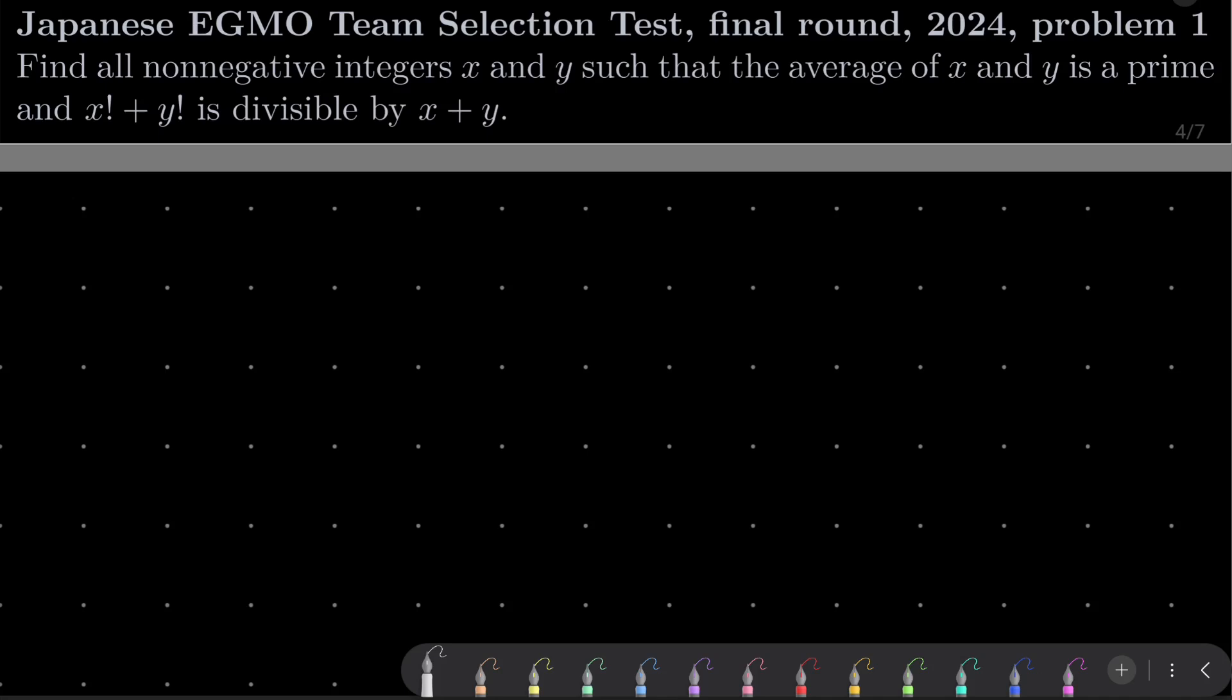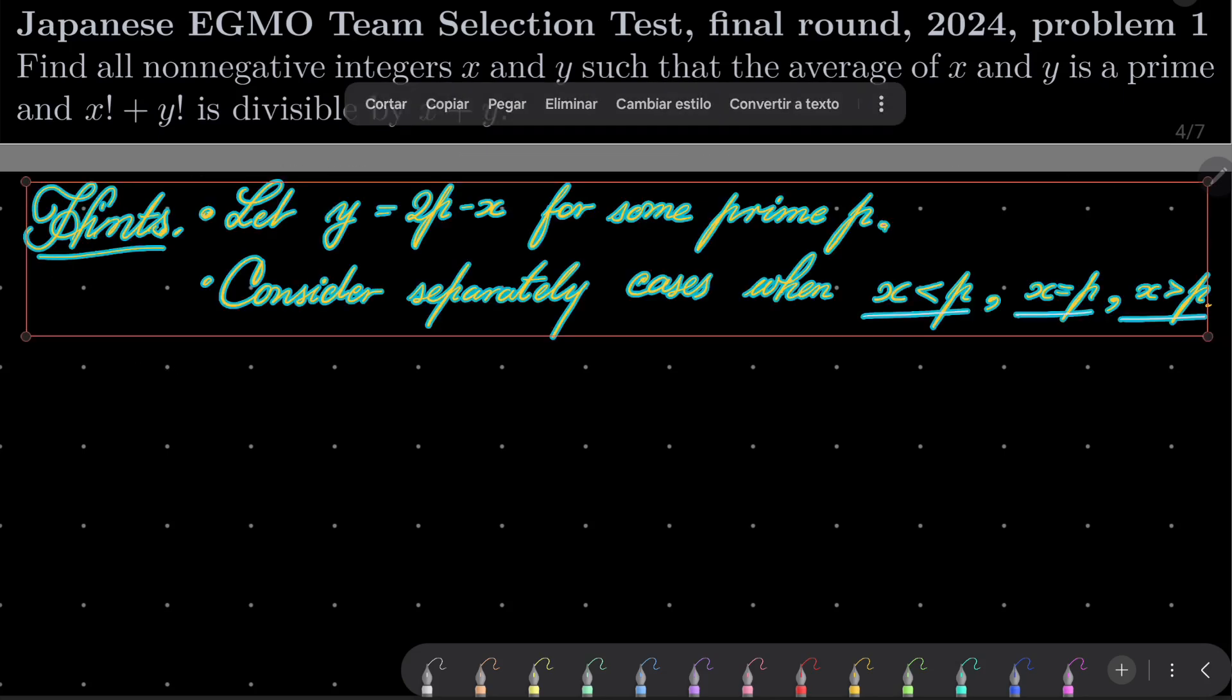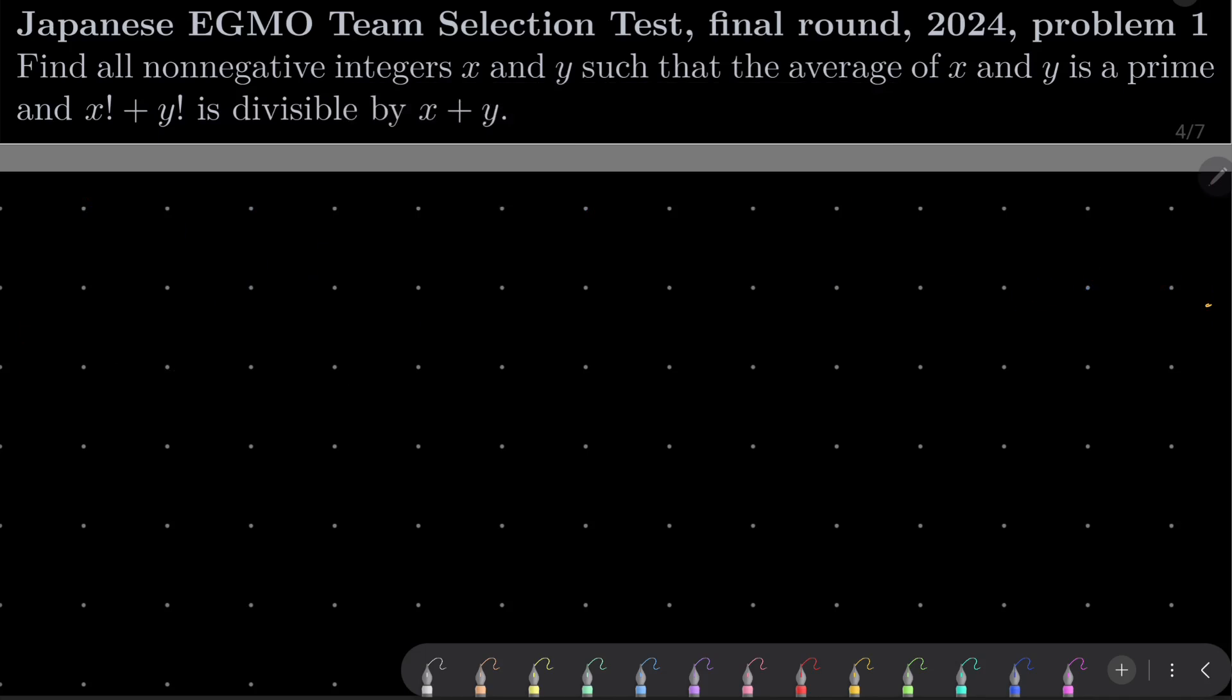So it's a rather straightforward problem, here are my hints. Since this average is a prime, you can derive that y can be expressed as 2 times p minus x for some prime number p. And for the second condition, consider separately cases where x is less than p, x equals p, and x is greater than p. That should be enough to give this problem a try.